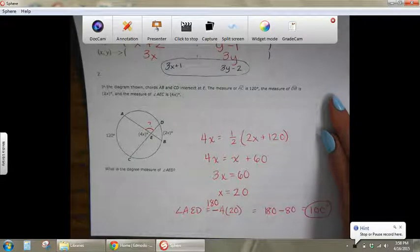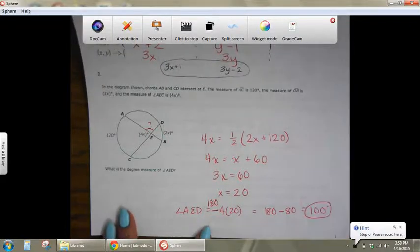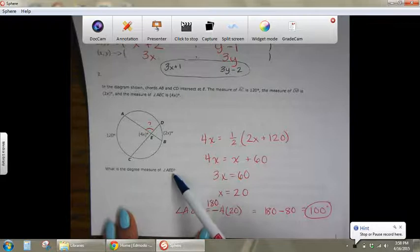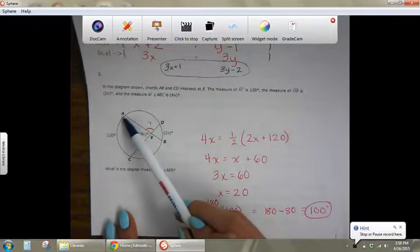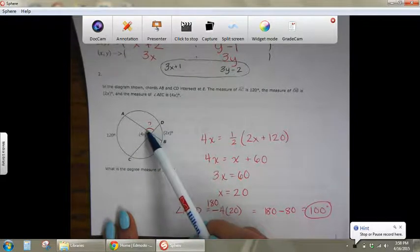Sorry, I already have this worked out and we can't do it step by step together. I put a marking on the angle we're supposed to find. It says what is the degree measure of angle AED, that would go from A to E to D, so this angle right here.